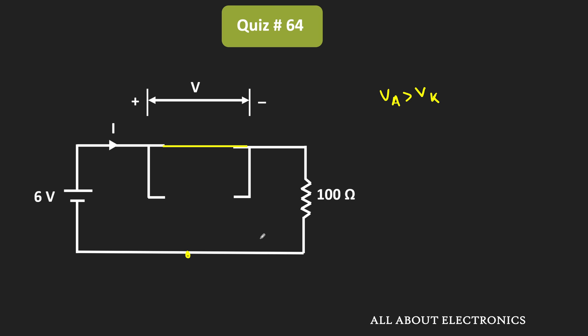In this condition, the voltage across the diode V equals 0. The current I equals 6V divided by 100Ω, which equals 60mA.